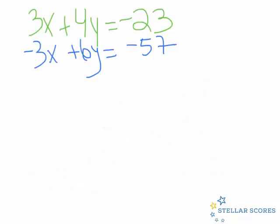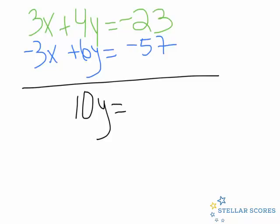I rewrote it so you could see it. Now let me add these together. 3x - 3x is 0. 4y + 6y is 10y. And then -23 + (-57) is -80. If I divide each side by 10, y = -8.